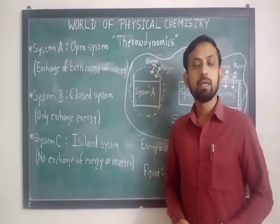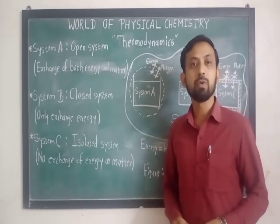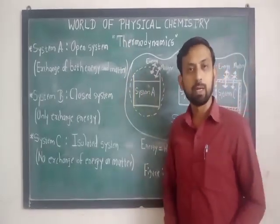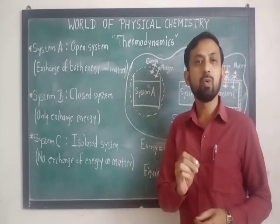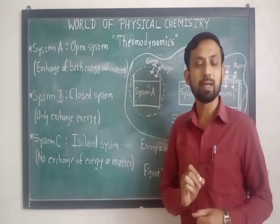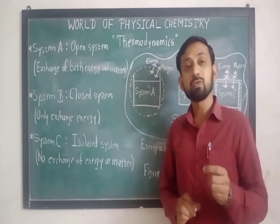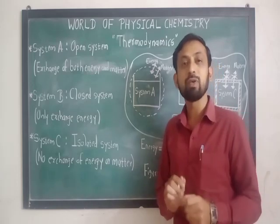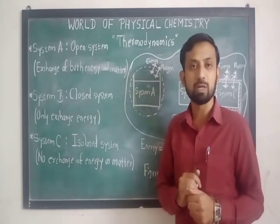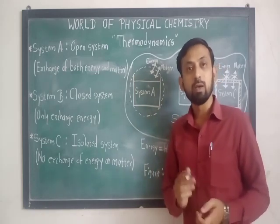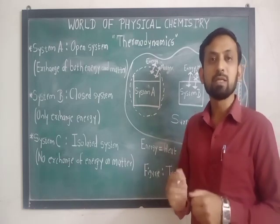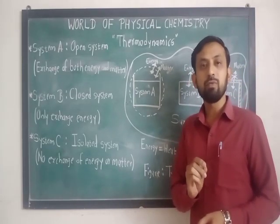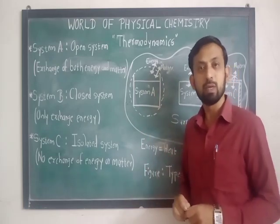Now we are going to discuss the types of system. We can classify the system into three categories: open system, closed system, and isolated system. The question arises on what basis we classify the system into these three categories. We make this classification on the basis of the nature of the boundary — the real or imaginary surface that separates the system from the surrounding.